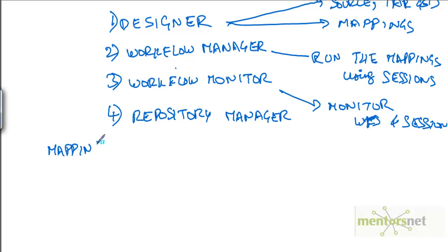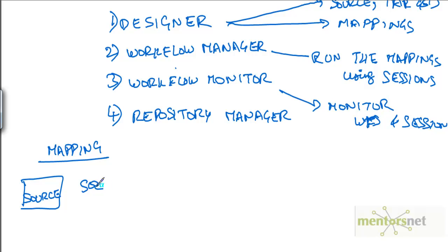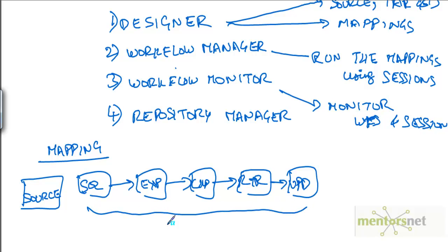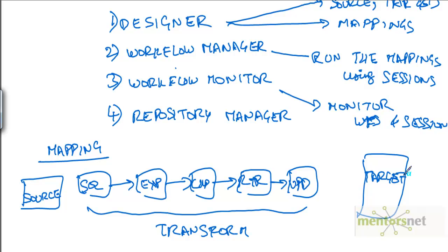A mapping looks like a source and a series of transformations — Source Qualifier, maybe an Expression, maybe a Lookup, maybe a Router, maybe an Update Strategy — and finally loading into the target. The target could be a database or a flat file. This is how a mapping is going to look like.